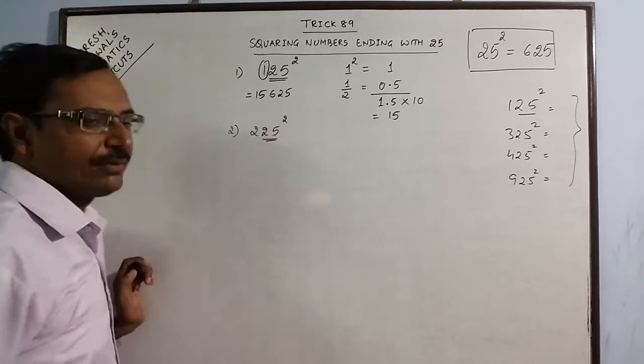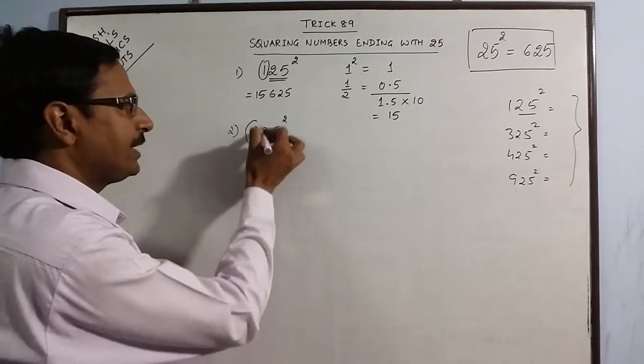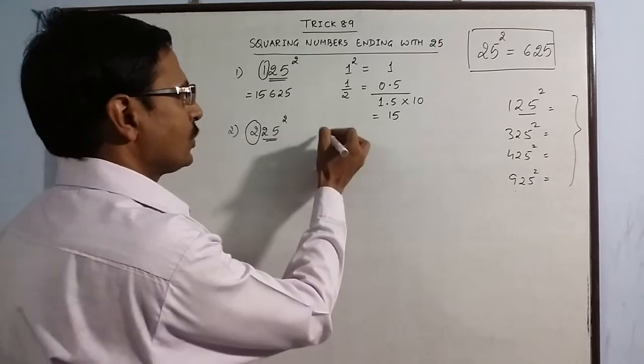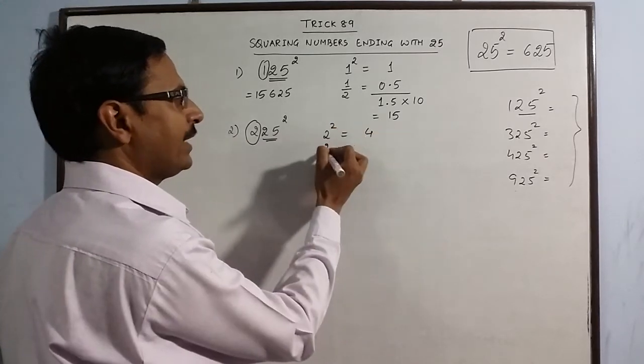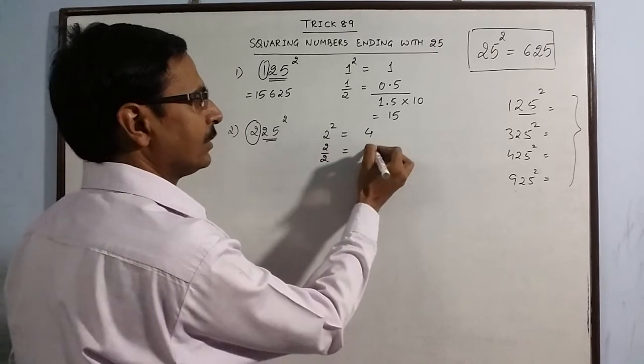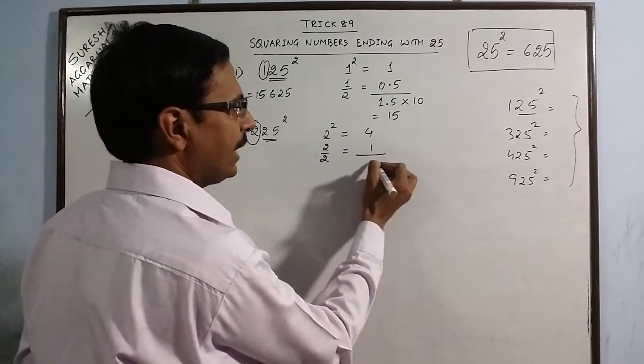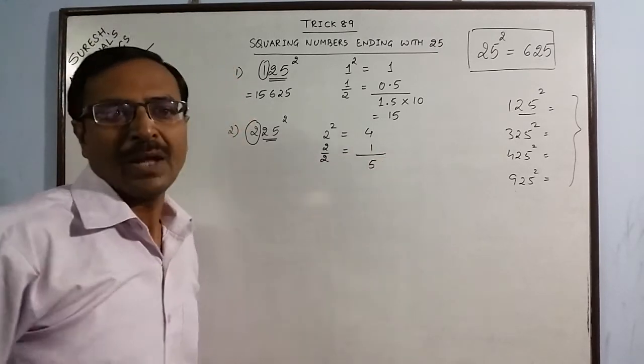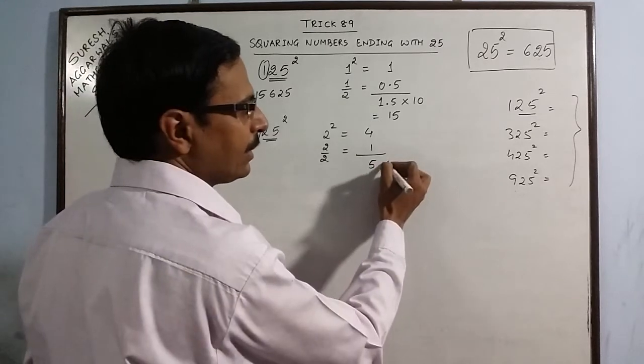Now we are leaving 25. We are left behind with 2. So you have 2 square as 4 and half of 2 as 1. This is add then you have 5, and when you multiply 5 by 10 you have 50.